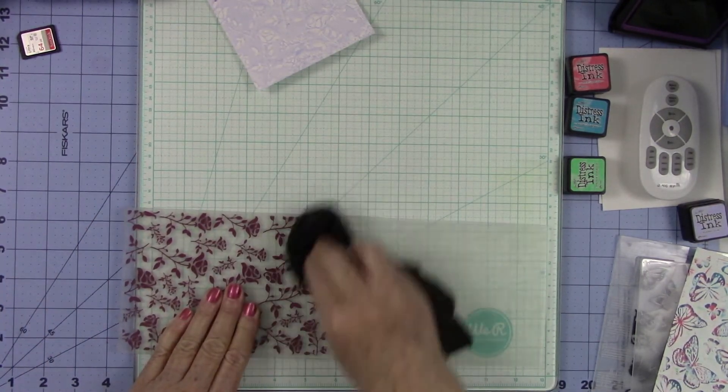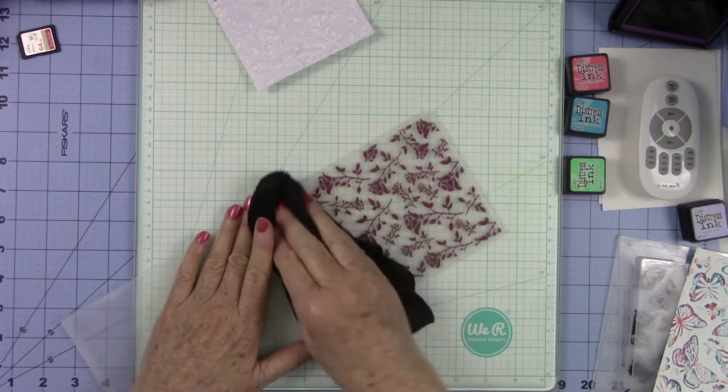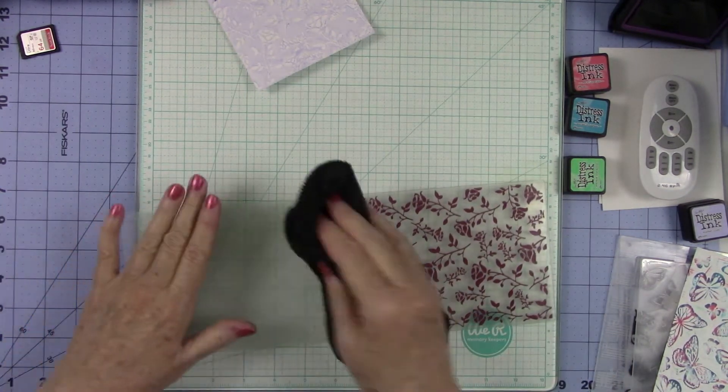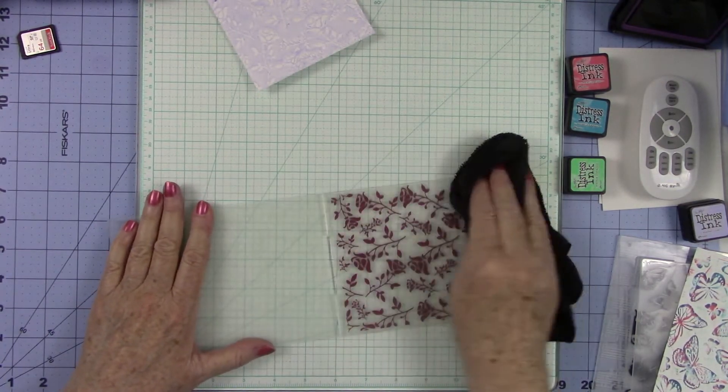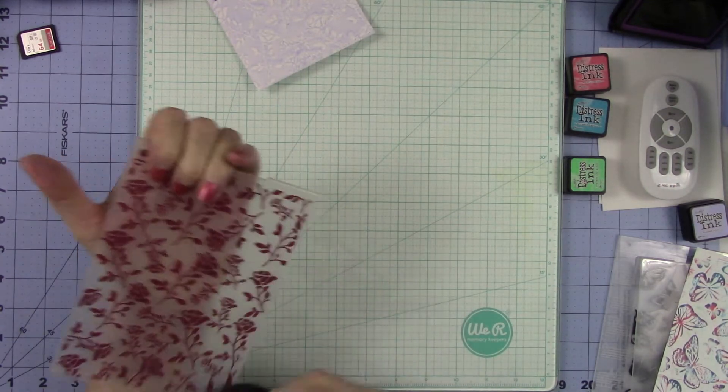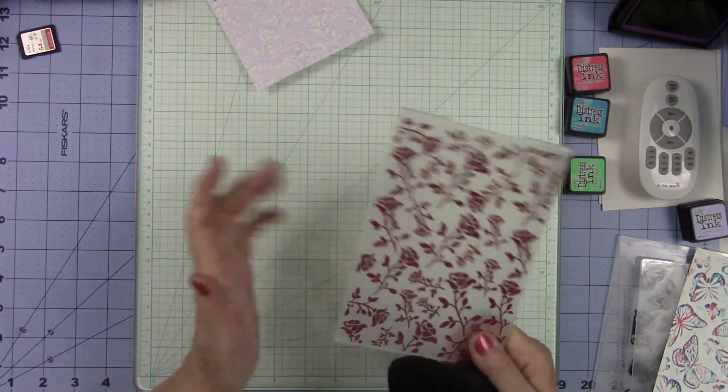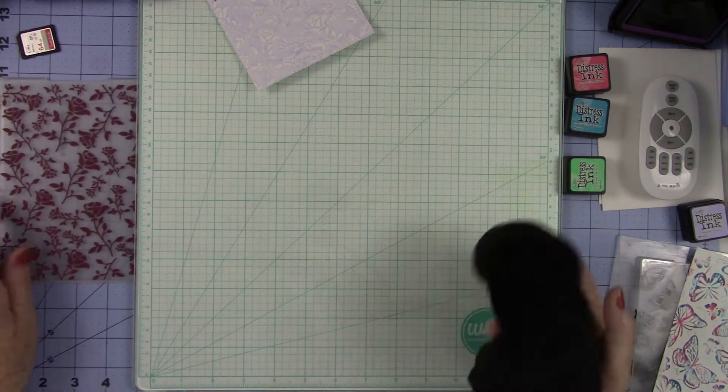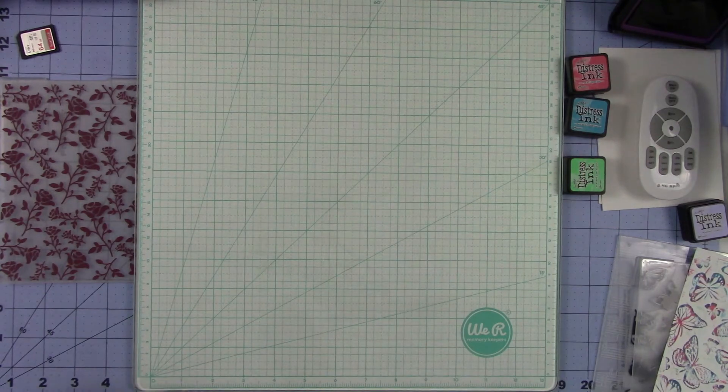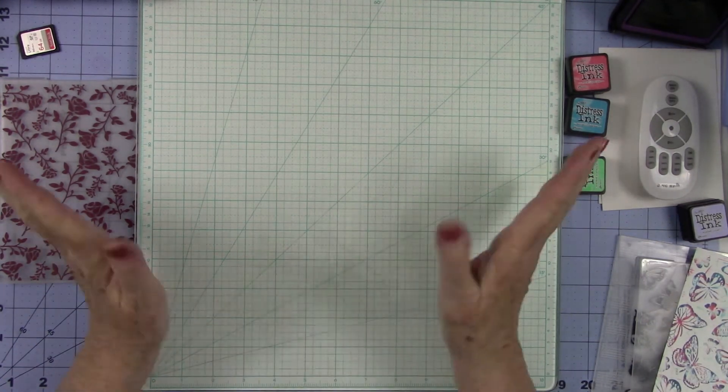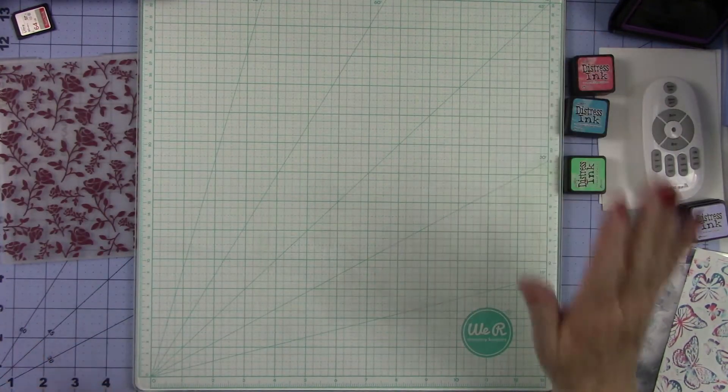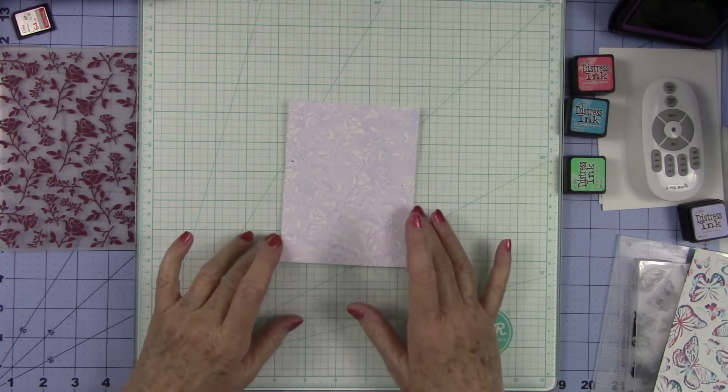I will tell you that your die cut embossing machine is an investment, it's not cheap, but you will be able to do so much with it. Your embossing folders, if you take good care of them, they will last forever. These are not very expensive. You can pick these up a couple bucks. Tuesday Morning has a vast array of embossing folders.